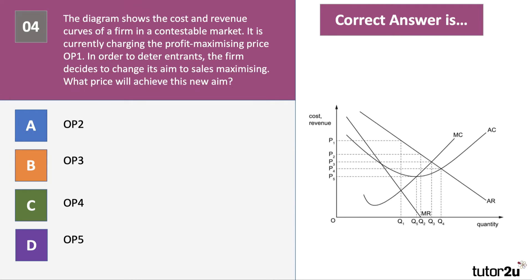Question number four. The diagram shows the cost and revenue curves of a firm in a contestable market. It's currently charging the profit maximising price of OP1. In order to deter entrants, the firm decides to change its aim to sales maximising. This question is essentially about limit pricing — moving away from profit maximisation and cutting the price to deter potential entrants. The price that achieves sales maximisation is answer C, OP4, where average cost meets the average revenue curve. You can cut the price up to the point Q4 where you're making normal profit.